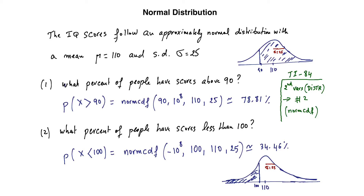This is a session on the normal distribution, which I alluded to last time when we discussed z-scores. Next time, I'm going to hook the normal distribution to the z-score and to the binomial distribution, so we're going to pull all of it together. Let me introduce the normal distribution.